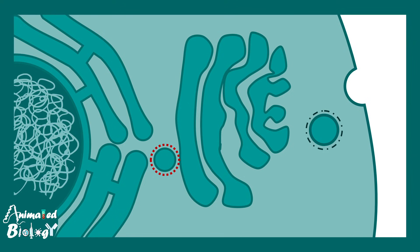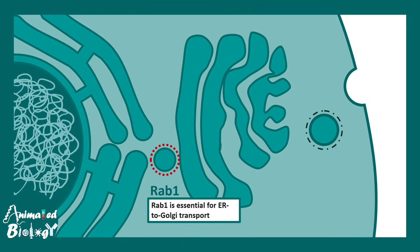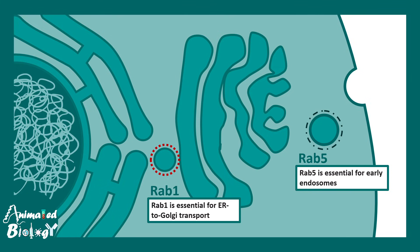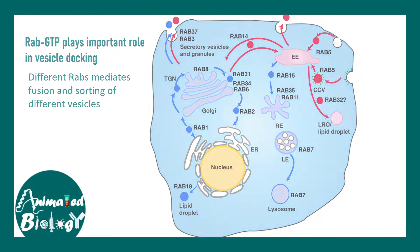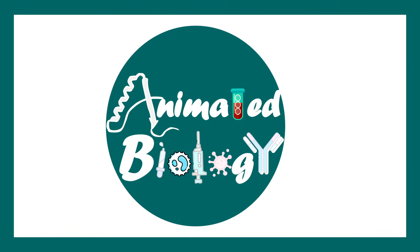The question of specificity of vesicle fusion — which vesicle fuses to which membrane — is also important, because there are thousands of vesicles trafficked inside the cell. Specificity is achieved via RABs: specific types of vesicles have specific types of RABs. For example, vesicles bound for delivery from the endoplasmic reticulum to the cis-Golgi have RAB1, whereas early endosomes have RAB5. This heterogeneity in RABs leads to membrane selectivity, with different RABs responsible for fusion of different vesicle types throughout the cell.